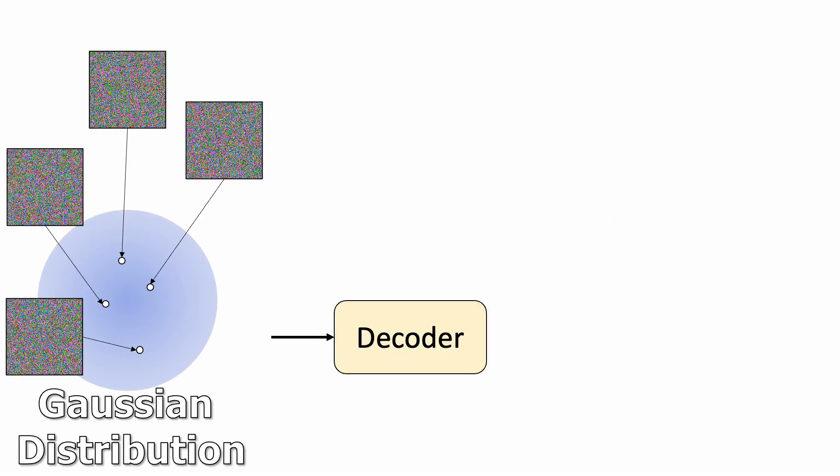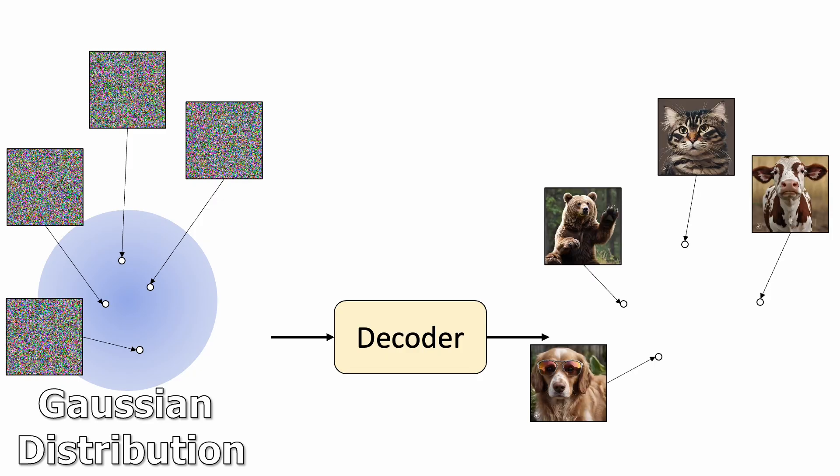Let's start with the simple Gaussian distribution for easy sampling. We want to design a generative model translating these noise samples into high quality images. More specifically, we want to find the parameters of this decoder that can transform a simple Gaussian distribution into a complicated natural image distribution.